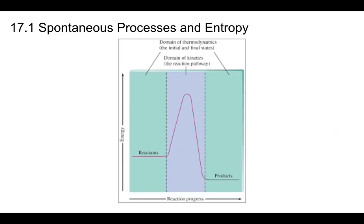If you think about reaction coordinate graphs, the energy of the reactant and product and whether the reactants or products have more energy — that's the domain of thermodynamics: the initial and final states. How you get from reactants to products — do you include a catalyst, lower the activation energy, use multiple steps, a three- or four-step mechanism, intermediates, a high or low activation energy, collision angles? That's all kinetics — that's all Chapter 12. But the energy you start at and the energy you end at, that's thermodynamics.